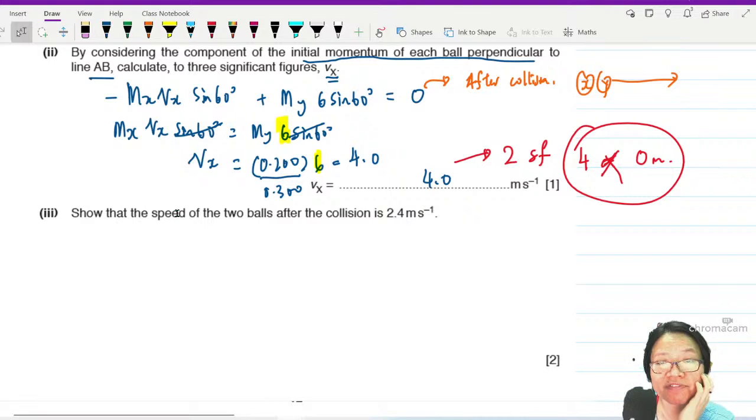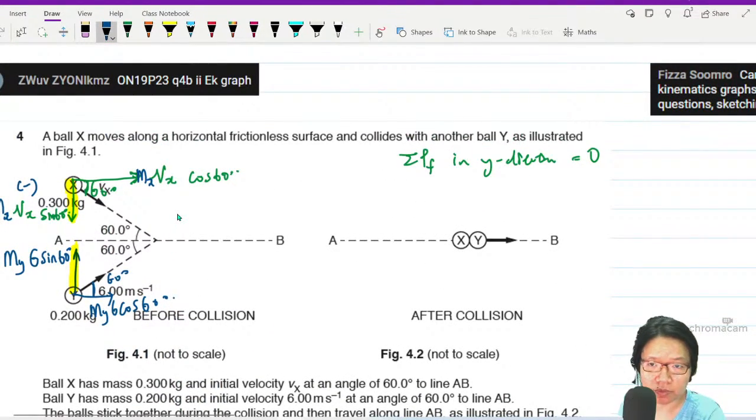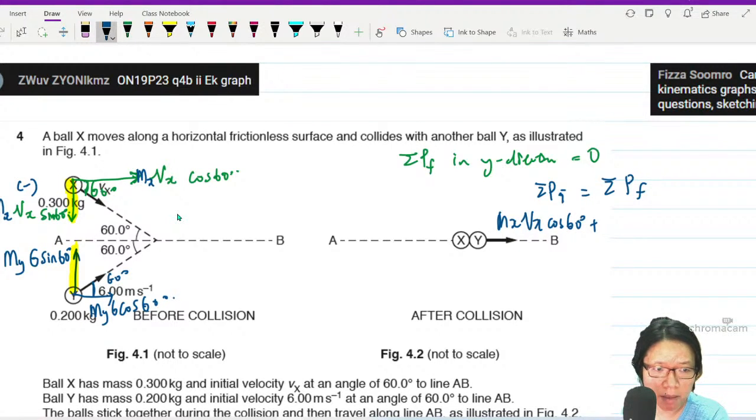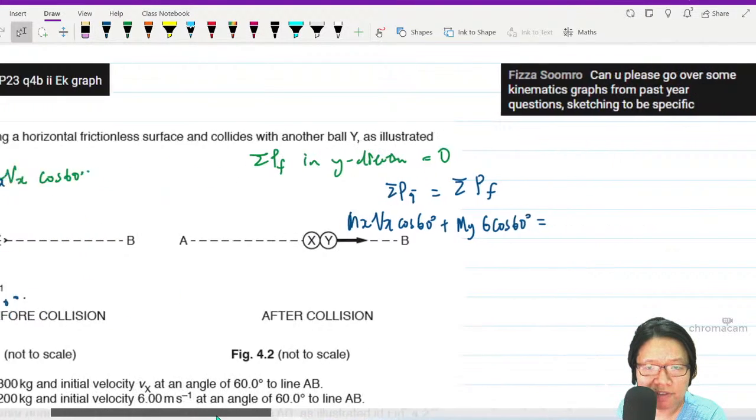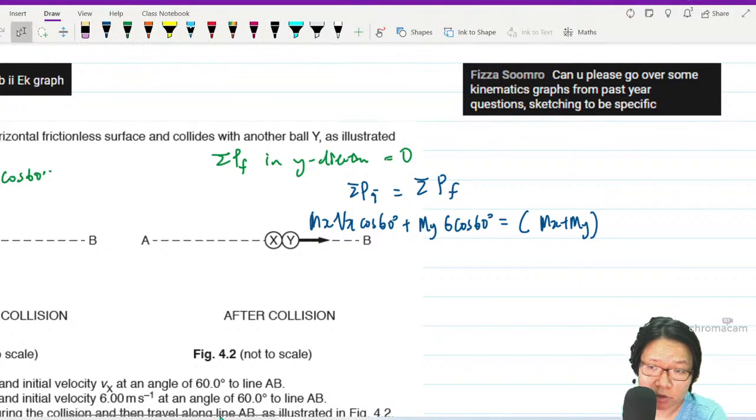Show the speed of the two balls after collision is 2.4. After collision, they move together. So what you can do is you can take sum of the initial momentum is equal to the sum of the final momentum. Initial momentum, you have MxVx cos 60 plus My 6 cos 60. After that, they travel together, so you sum up the mass, Mx plus My times V.